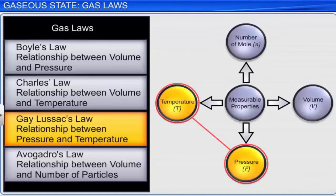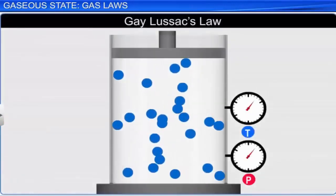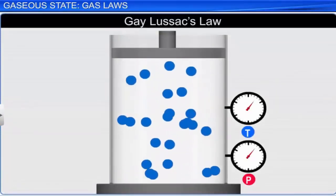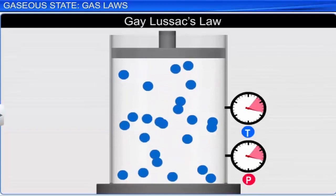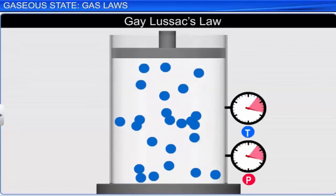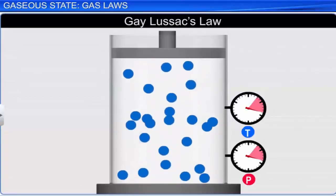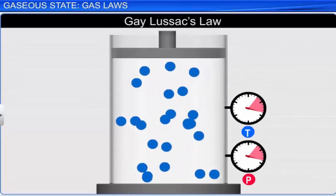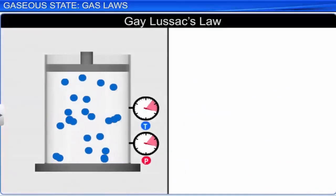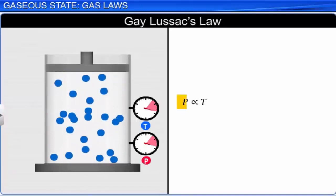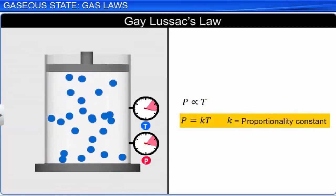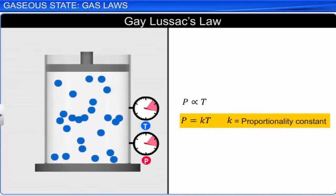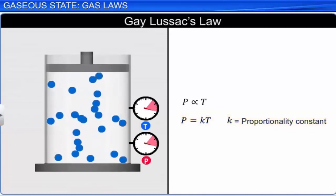The next law is Gay-Lussac's law. According to Gay-Lussac's law, at constant volume, the pressure of a fixed amount of gas varies directly with the temperature. In other words, at constant volume, the temperature of a gas increases with increase in pressure and decreases with decrease in pressure. Mathematically, Gay-Lussac's law can be written as P is directly proportional to T, or P equals KT, where K is the proportionality constant. The numerical value of K depends upon the amount of gas taken and the volume.